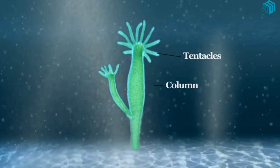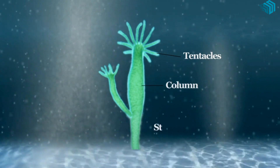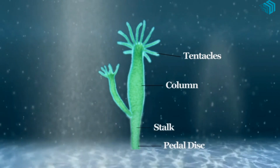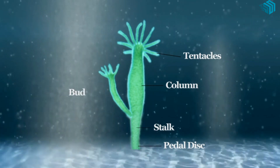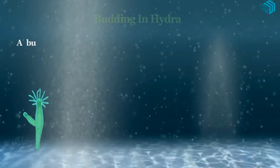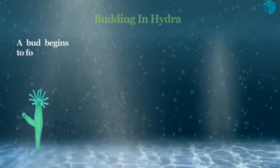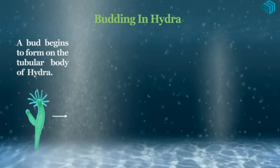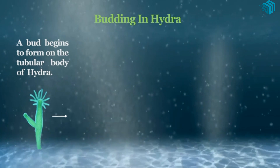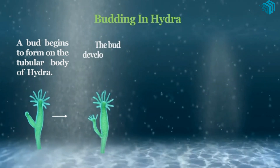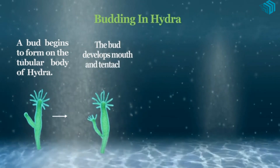Organisms like hydra and sponges reproduce by budding. A bud begins to form on the tubular body of an adult hydra. The bud develops a mouth and tentacles.